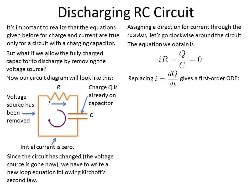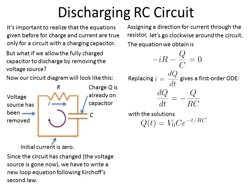We know that the current is equal to the change of charge over the change of time, and this gives us another first-order ordinary differential equation, or ODE. We see that the change of charge with respect to time is equal to the charge divided by our time constant RC. The solution is: the charge as a function of time equals V-naught times C times e to the minus t over RC, and the current corresponds to minus V-naught over R times e to the minus t over RC.